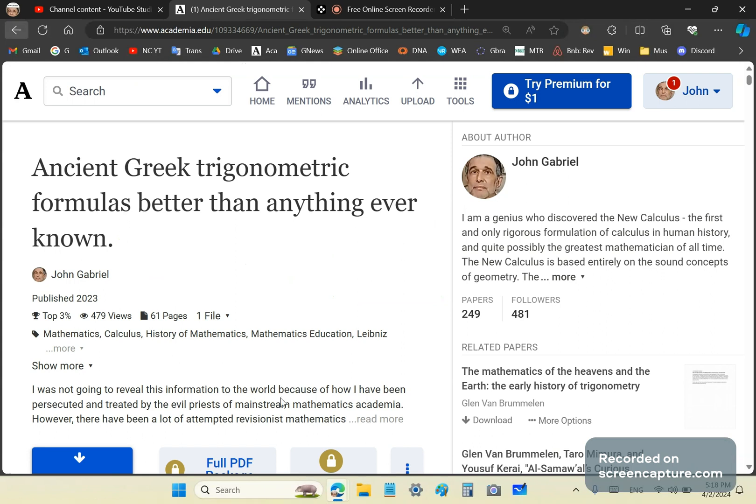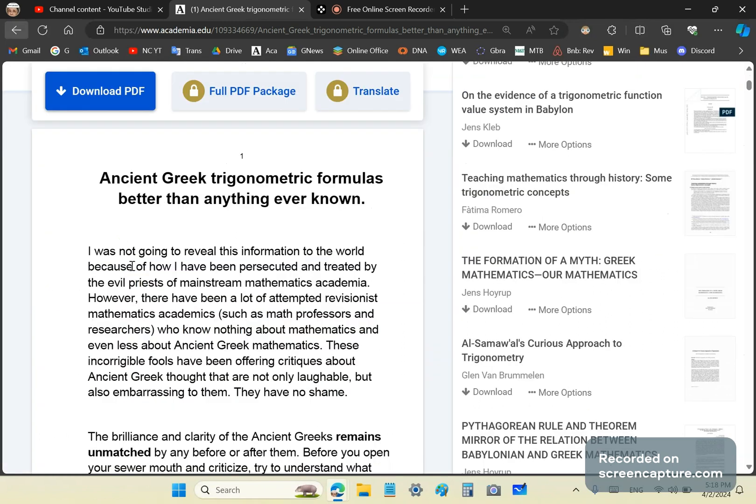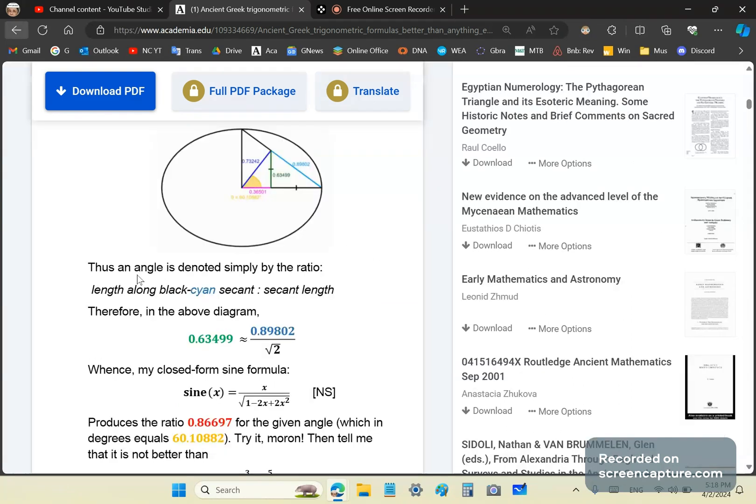In other words, Newton's sine and cosine series look like a joke compared to what you will find in this article, because I show you how to do trigonometry without even using a circle. The only thing you take away from the circle is the right angle.